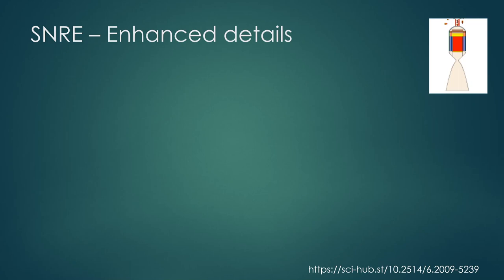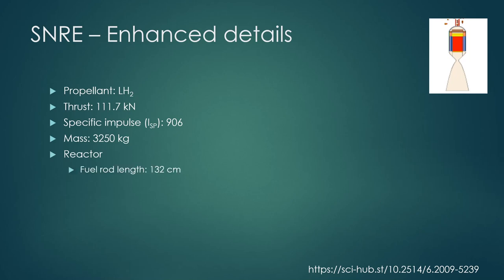So let's talk about details about this specific design. This uses liquid hydrogen as a propellant, which is true of pretty much all nuclear thermal rocket designs with maybe a few exceptions. It has a thrust of about 112 kilonewtons, a specific impulse of 906 which looks very interesting and promising. It weighs about 3,250 kilograms. And the reactor is made of fuel rods that are 132 centimeters long, and the reactor core is about 30 centimeters across. So you can think of this as a kind of long and thin reactor.